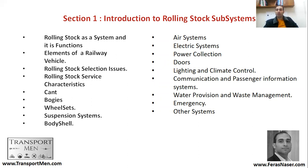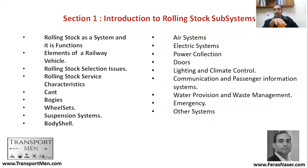Elements of a railway vehicle — what does a railway vehicle consist of? We'll be talking about railway rolling stock selection issues and railway rolling stock service characteristics. The service characteristics of a metro are different from those of an intercity train, and different again from a high-speed rail. We'll also cover cant — the super elevation, a small angle on curves that ensures balance with centrifugal force.